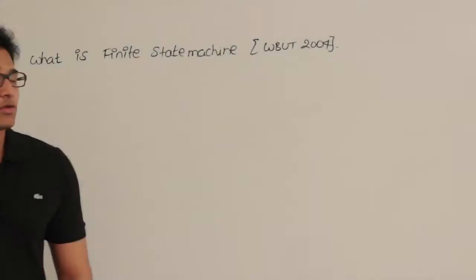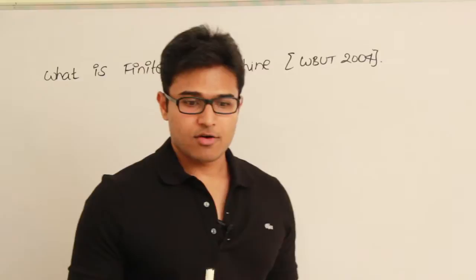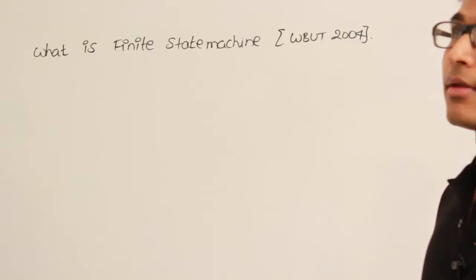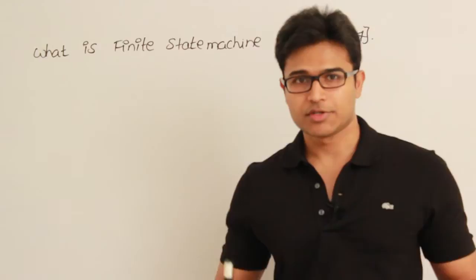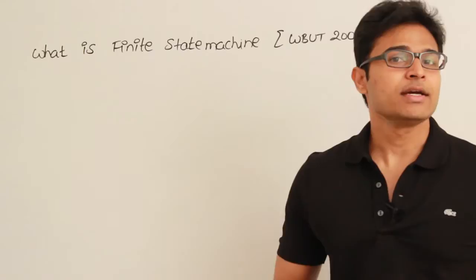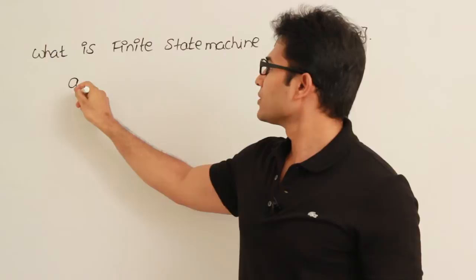This is a theory question. The first thing you can write is: a finite state machine, also sometimes called a finite automata. It is mainly consisting of a quintuple.